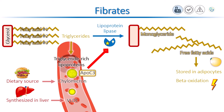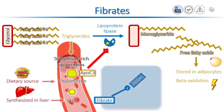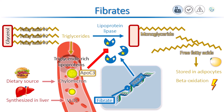Fibrates activate PPAR-alpha, the peroxisome proliferator-activated receptor alpha, which is a major regulator of lipid metabolism. When activated by fibrates, they increase the gene expression for lipoprotein lipase, so more lipoprotein lipase is made. In contrast, fibrates suppress APO C3 via PPAR-alpha. This enhances the conversion of triglycerides in chylomicrons and VLDL into fatty acids, thus decreasing triglyceride levels.